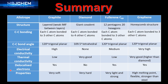Finally, here's a summary of the allotropes of carbon covering their structure, bonding, bond angle, electrical conductivity, thermal conductivity, whether they have delocalized electrons, and any special properties. A link to this summary document will be in the video description.